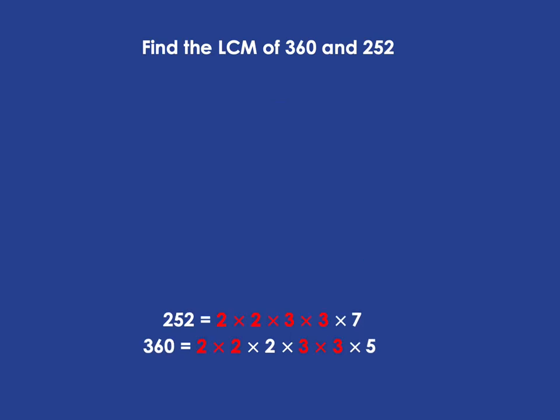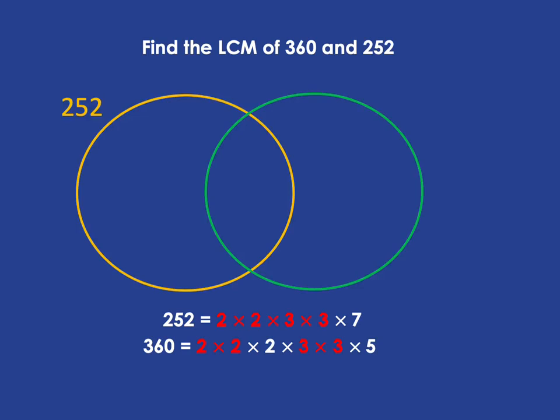Now, if we have a look at that, we're going to see that 252 and 360 have in common a 2 times 2. Both of them have that. And a 3 times 3. We're going to draw a picture of that. So we're going to put everything that's in 252 in the yellow and everything that's in 360 in the green. And then this picture is going to help me sort out what's going on a little bit better.